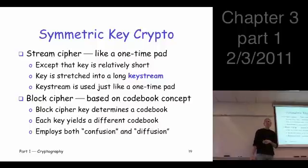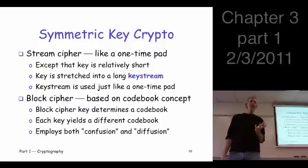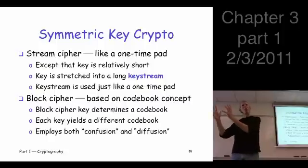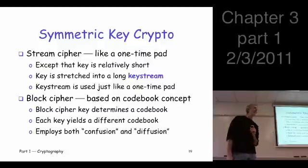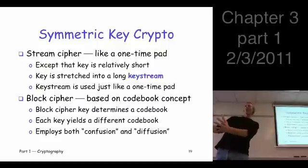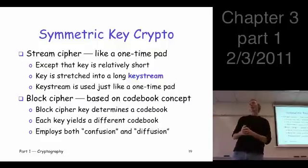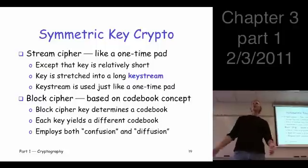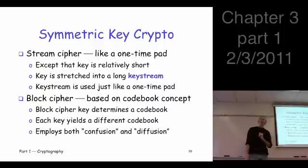The block cipher is based on the code book. It's easy to lose sight of that when we get into the details, but keep in the back of your mind that it's really just a code book — you're looking up one block of bits and substituting another. It wouldn't be so useful with just a single code book, because eventually there are statistical attacks; you can figure out what a cipher text string corresponds to in the plain text.